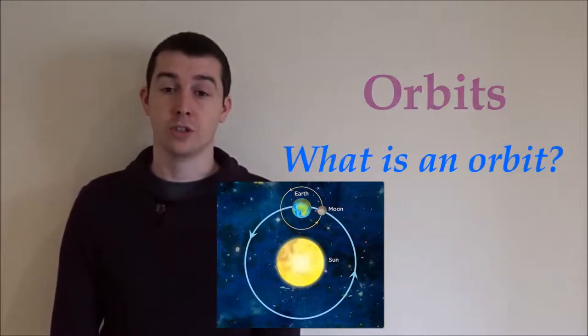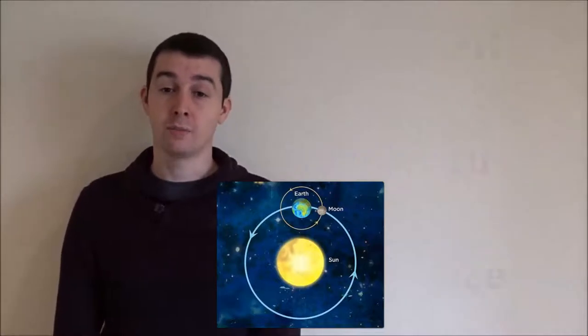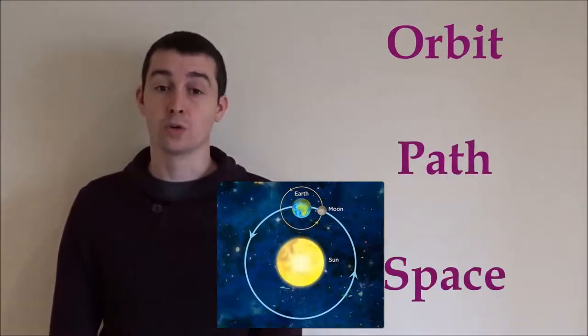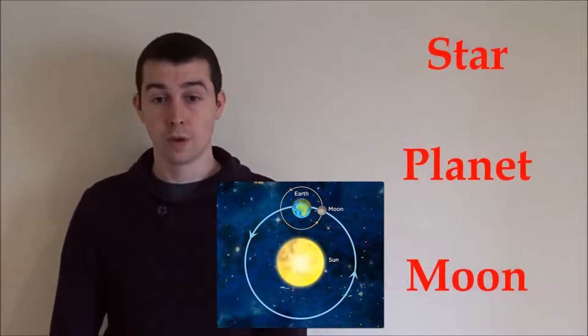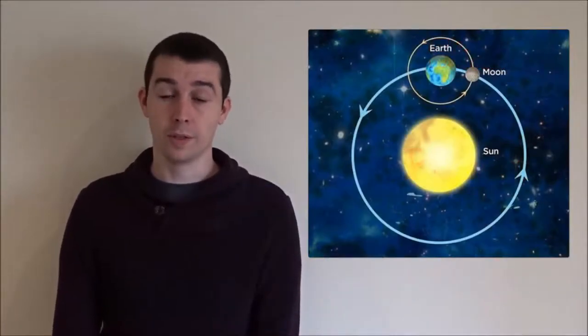First let's ask the question, what is an orbit? An orbit is the path that an object takes in space when it goes around a star, a planet, or a moon. For example, the moon orbits the earth and the earth orbits the sun.